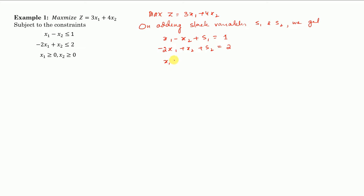And we also have x1 ≥ 0, x2 ≥ 0. Now that we have converted this into standard form, we will find the initial basic feasible solution. We have four variables x1, x2, s1, s2 but only two equations. So two variables are extra, and initially we can assume x1 = 0 and x2 = 0.